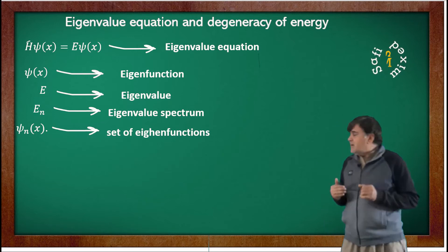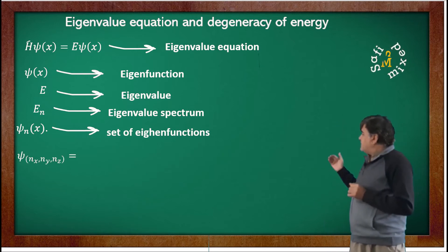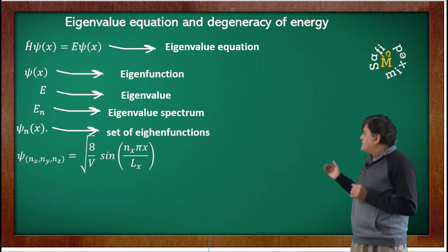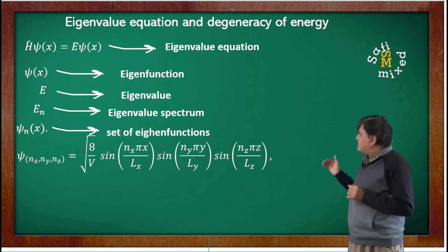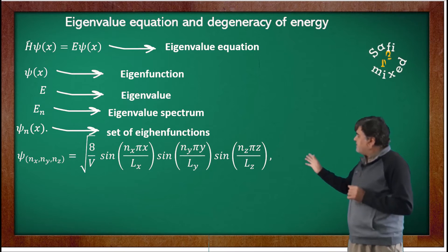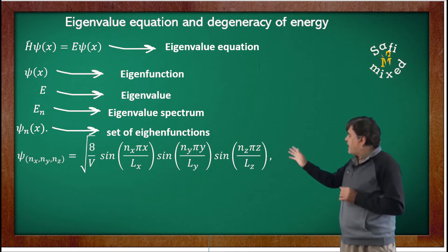ψ_{n_x,n_y,n_z} = √(8/V) sin(n_x π x/L_x), and similar factors are applied for the Y and Z components. So we have a wave function of three different sine functions multiplied with each other.